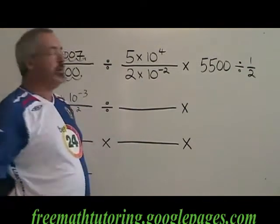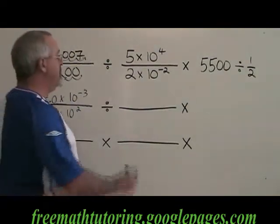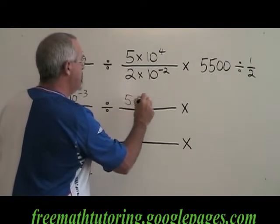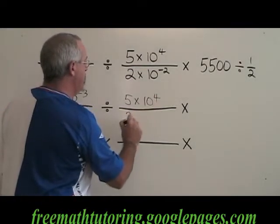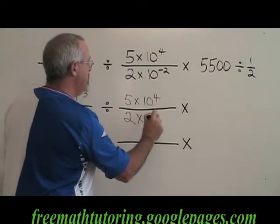The second fraction is already in scientific notation. So I'm just writing it down here. 5 times 10 to the 4 over 2 times 10 to the negative 2.